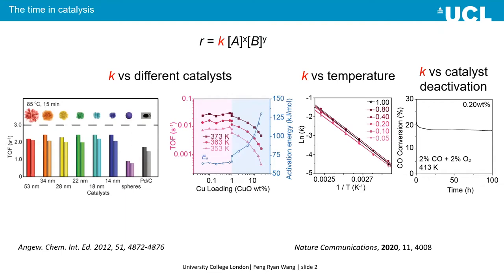We can also plot k as a function of temperature — that's how we use the Arrhenius equation to determine the activation energy of the reaction, the barriers that molecules need to overcome with the help of the catalyst. We can also do activity stability tests to understand how k changes as the catalyst structure changes during deactivation.